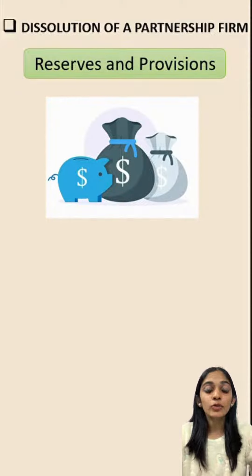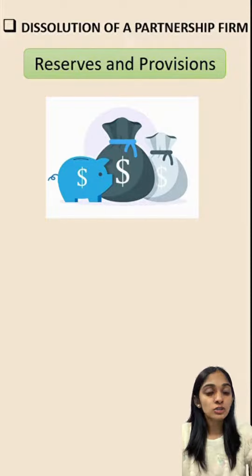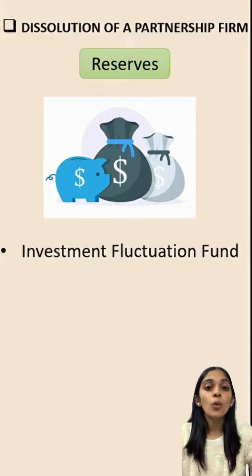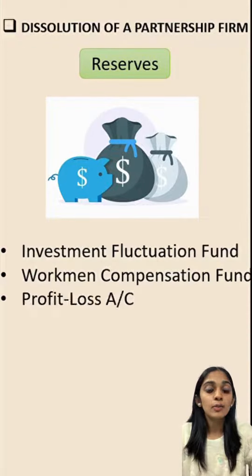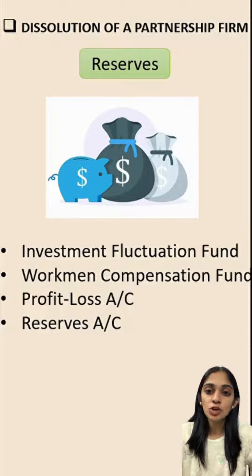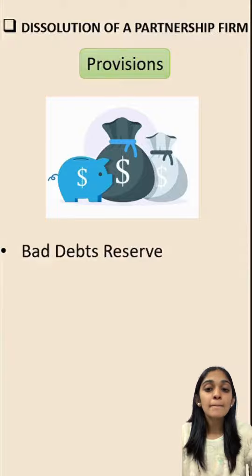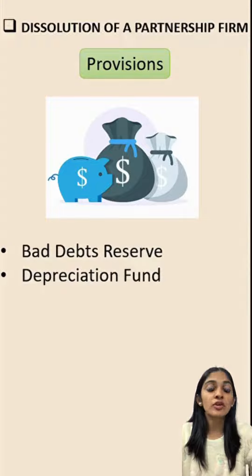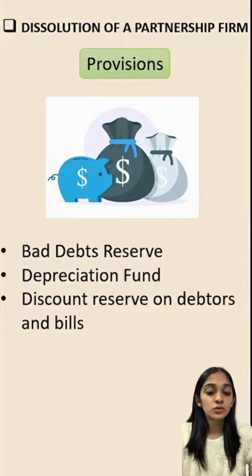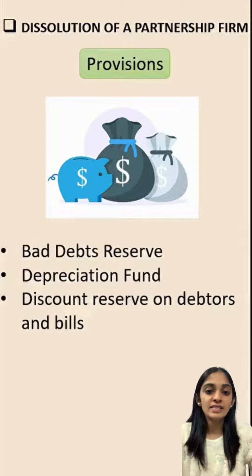After the disposal of assets and liabilities, the next items remaining in our balance sheet will be reserves and provisions. All the reserves — that is, Investment Fluctuation Fund, Workman Compensation Fund, and Profit and Loss Account reserves — will be distributed among the partners. All the provisions like Benefits Reserve, Depreciation Fund, Discount Reserve on Debtors and Bills will be disclosed in the Realization Account.